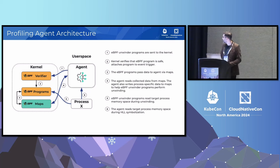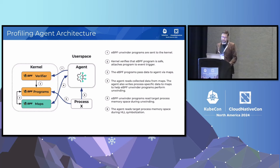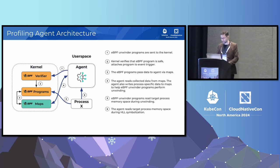Here is a high-level architectural diagram showing the agent split into two components: a kernel space component implemented in eBPF C, and a user space component in Go. During initialization, we set up all the eBPF maps, load the unwinder programs into the kernel, and configure the event pumps. Data exchange between components takes place over eBPF maps, and we also use perf events for messaging. Both the eBPF programs and the user space agent process can read target process memory — eBPF does this during unwinding, and user space does it during high-level language symbolization. The process manager tracks processes, executable mappings, and populates eBPF maps accordingly.